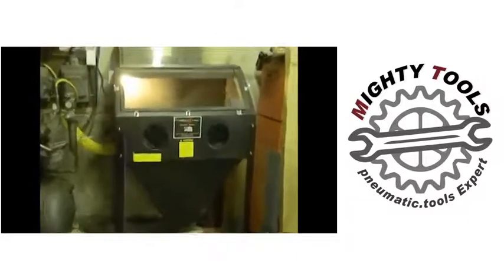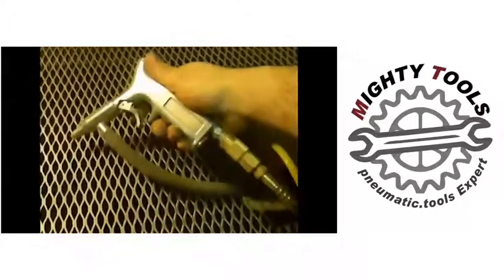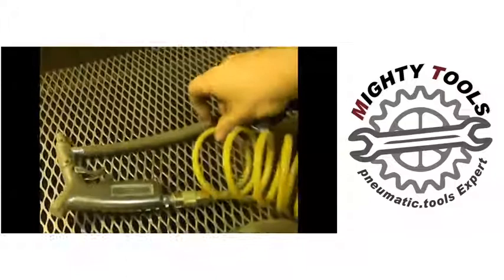All right guys, this is our sandblasting cabinet. This is the latest addition to the shop. Now what I want to show you inside, this is the sandblasting gun. There's two lines going into the gun. The yellow line is for the compressed air.